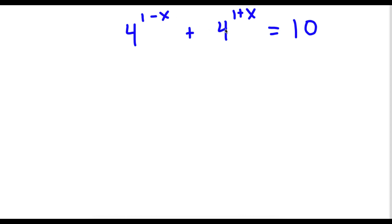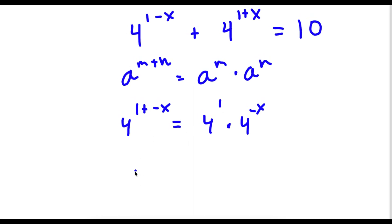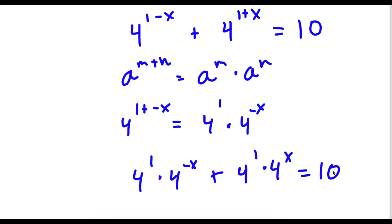Now for the bonus problem: I have 4 to the power of 1 minus x plus 4 to the power of 1 plus x is equal to 10. Using the rule that a to the power of m plus n equals a to the power of m times a to the power of n, I can rewrite 4 to the power of 1 minus x as 4 to the power of 1 times 4 to the power of negative x, and 4 to the power of 1 plus x as 4 times 4 to the power of x. This all equals 10.